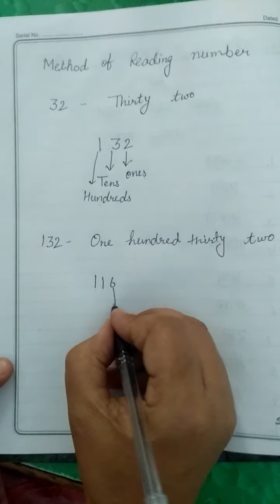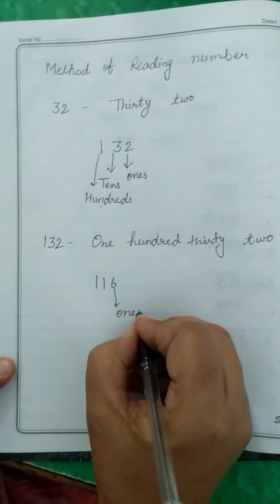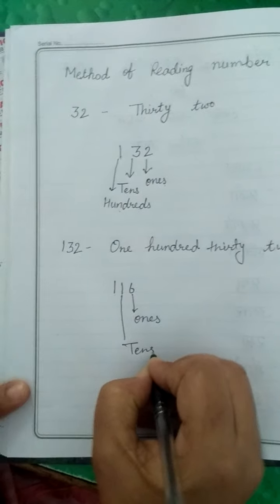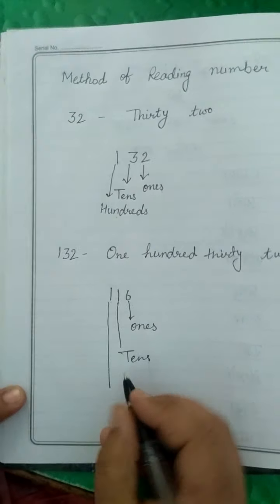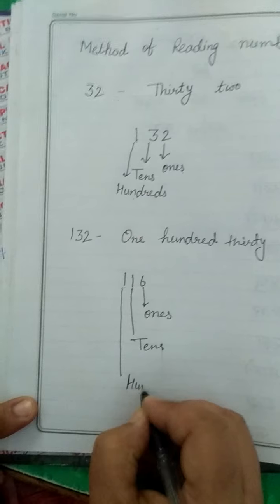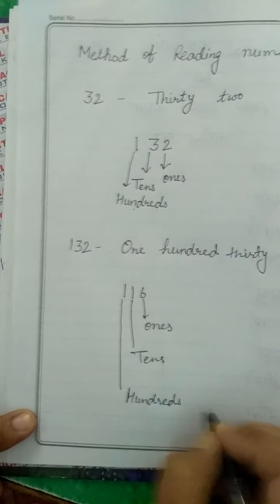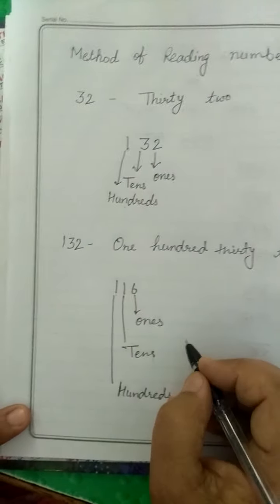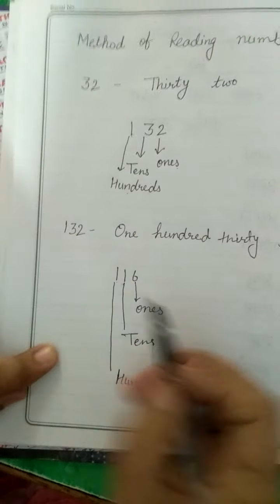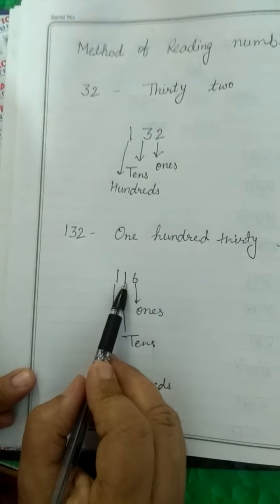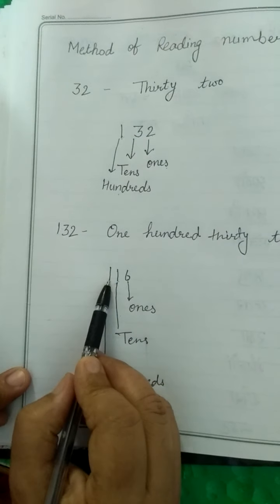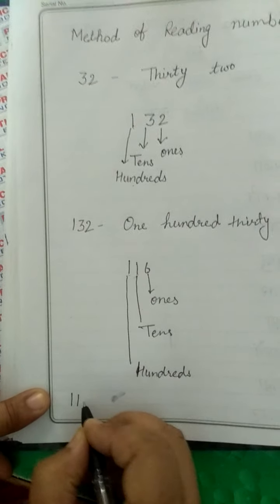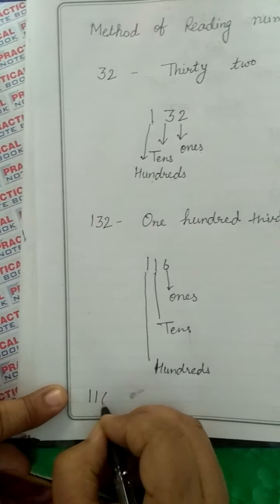Now we will take another number: one hundred sixteen. Read the number — one hundred sixteen. Six is in the ones place, one is in the tens place, and again one is in the hundreds place. You will learn their places: ones, tens, hundreds.